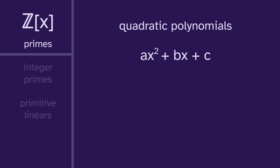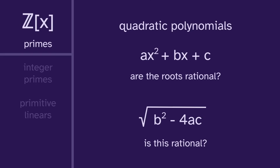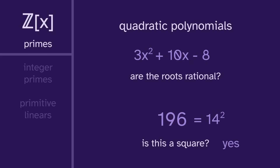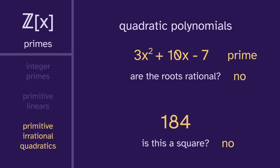So if we want to know if this is prime, we should ask: are the roots rational? To find the roots we use the quadratic formula. We want to know if the discriminant b² minus 4ac is rational, which is the same as asking if it's a perfect square. For one polynomial, plugging in the coefficients gives us 196, which is 14 squared — so yes, the roots are rational, we can factor it, and it's composite. For another, we get 184, which is not a perfect square, so the roots are not rational, meaning that it's prime. So our next set of primes is the primitive, irrational quadratics — and here, irrational means the roots, not the coefficients.